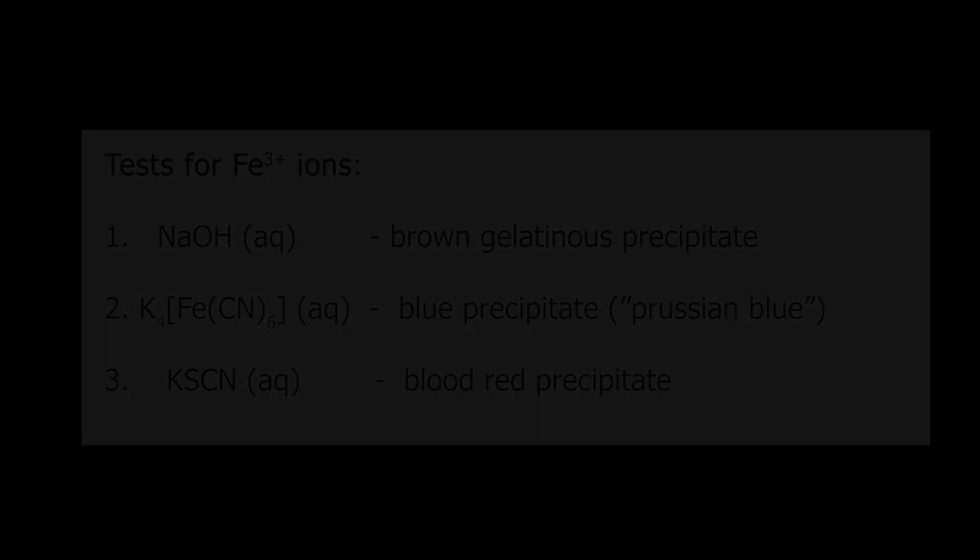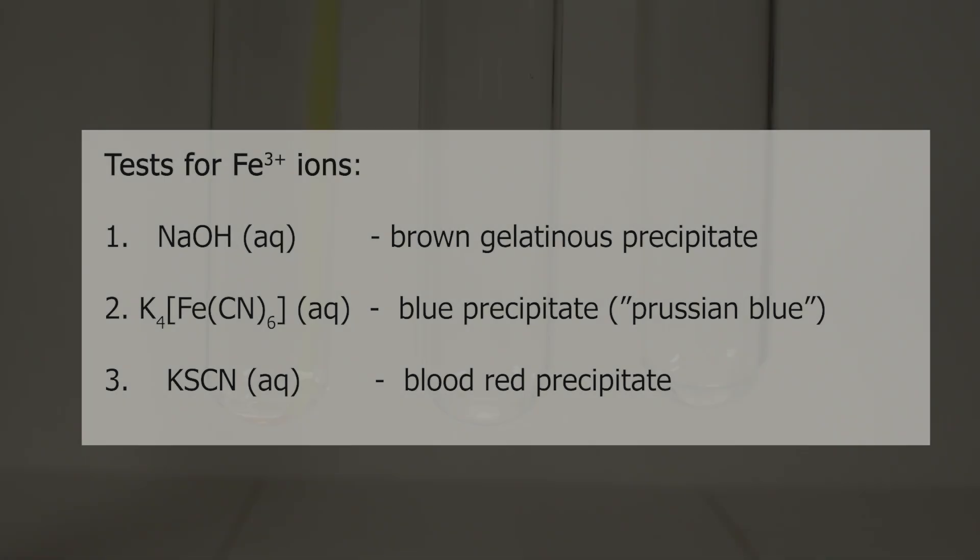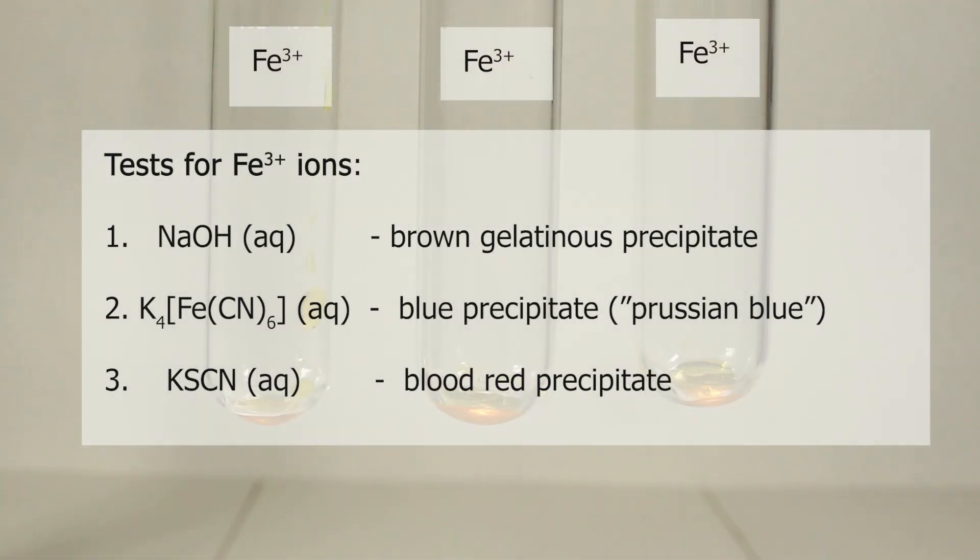Let's run through it again. Test for iron-3. Sodium hydroxide: gelatinous brown precipitate. Potassium ferrocyanide: Prussian blue precipitate. And potassium thiocyanate: blood red precipitate.